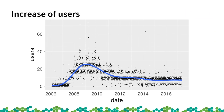The points represent the number of users created every month. The blue line is the regression of the points so you can see the trend more clearly. We can see some interesting things — some months we have more than 80 new users, and then some months we have zero or almost zero.